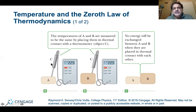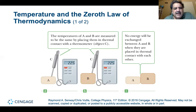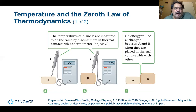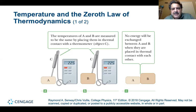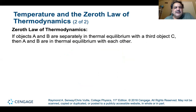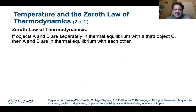Let's start with temperature and the Zeroth Law of Thermodynamics. You have two items: Object A and Object B, each connected to Object C, which is a thermometer. Object A registers 22.5°C and Object B registers 22.5°C. Since they are both at 22.5°, if you put them next to each other, no energy will be exchanged between A and B when placed in thermal contact — they are in thermal equilibrium. If objects A and B are separately in thermal equilibrium with a third object C, then A and B are in thermal equilibrium with each other.